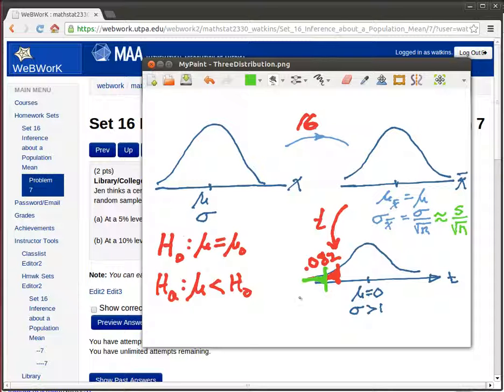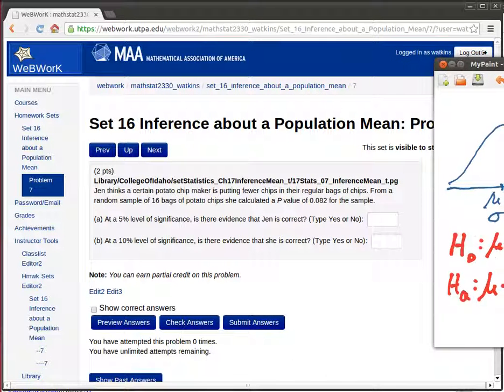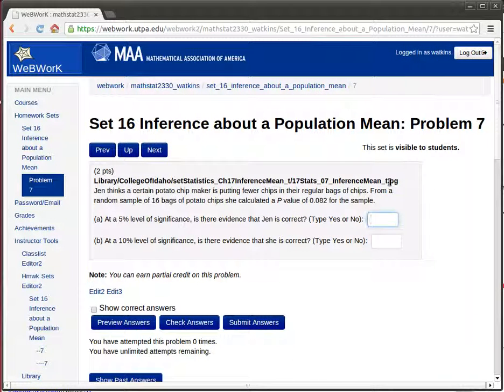Now five percent would put us over here, because down here would need to have that tail being five percent, 0.05. At a five percent level of significance, this isn't down in that danger region, so the answer is no, there's not enough evidence to support Jen's argument.